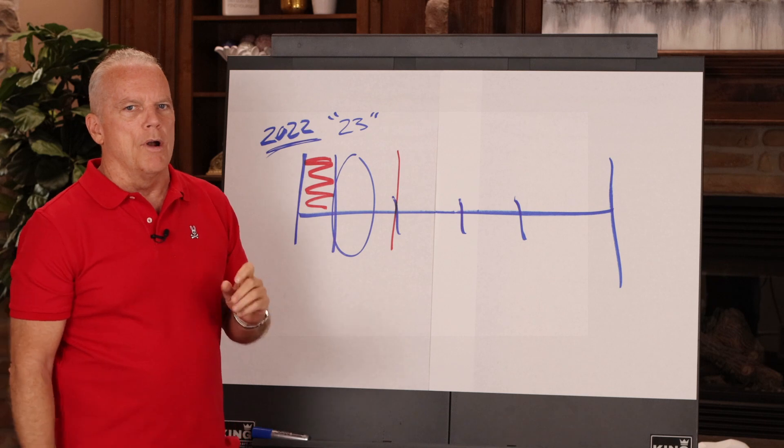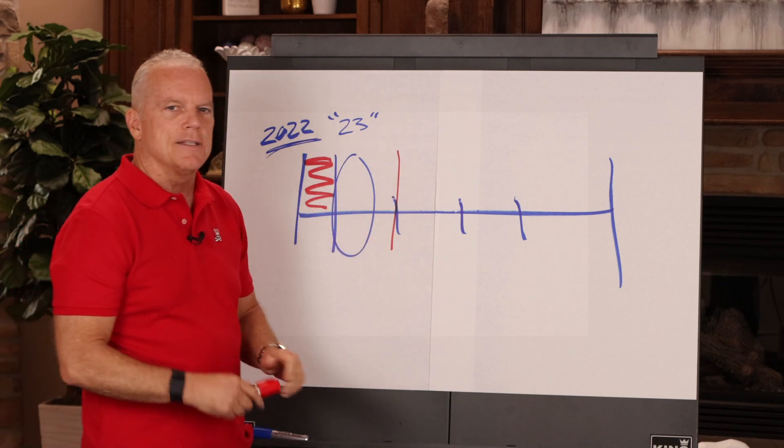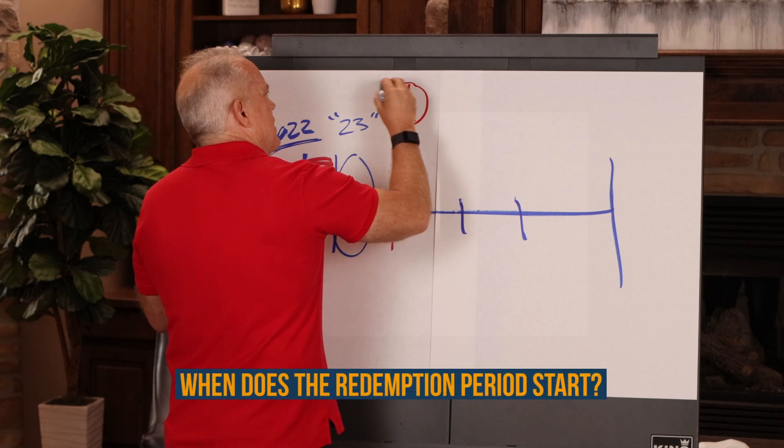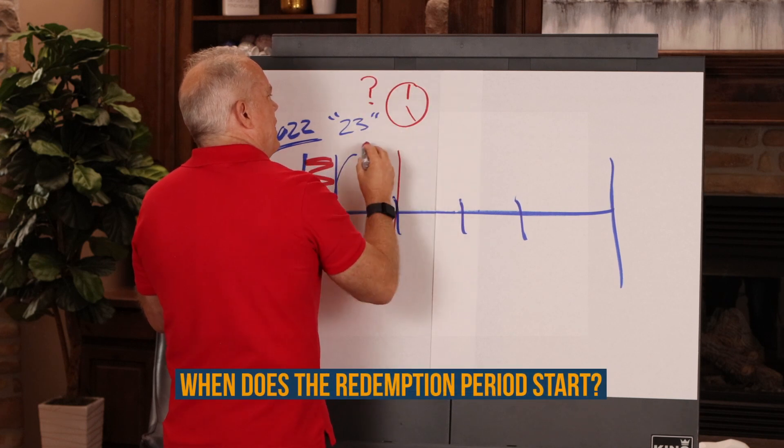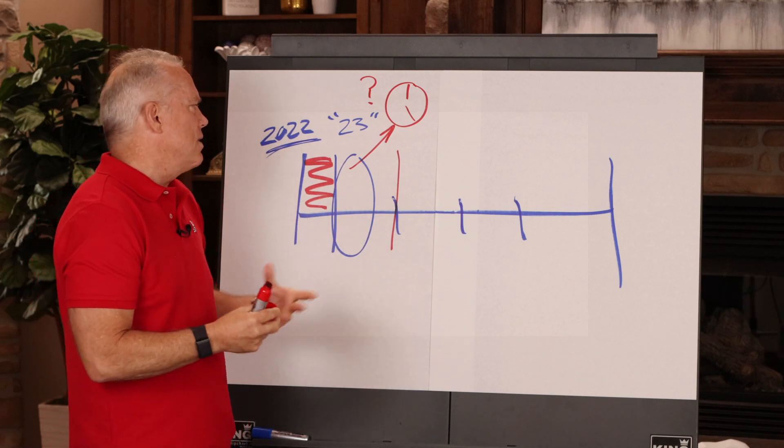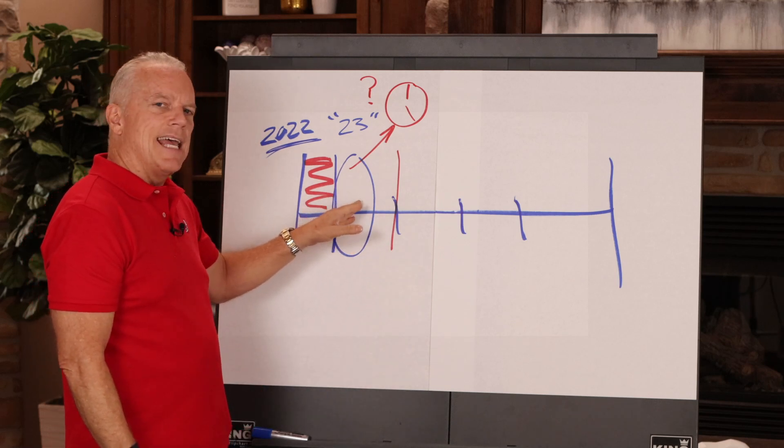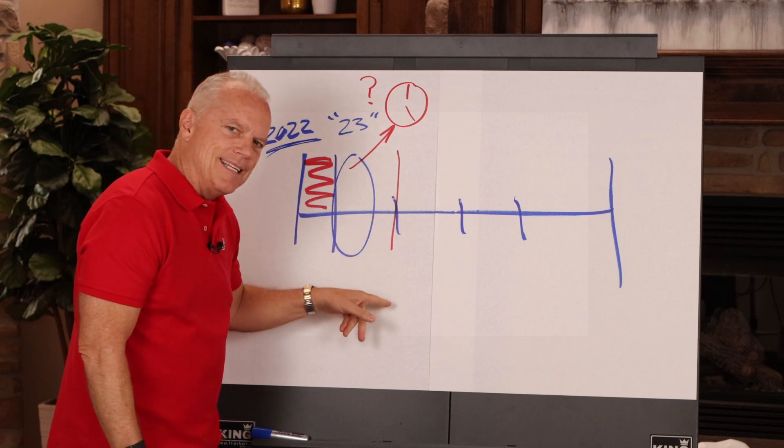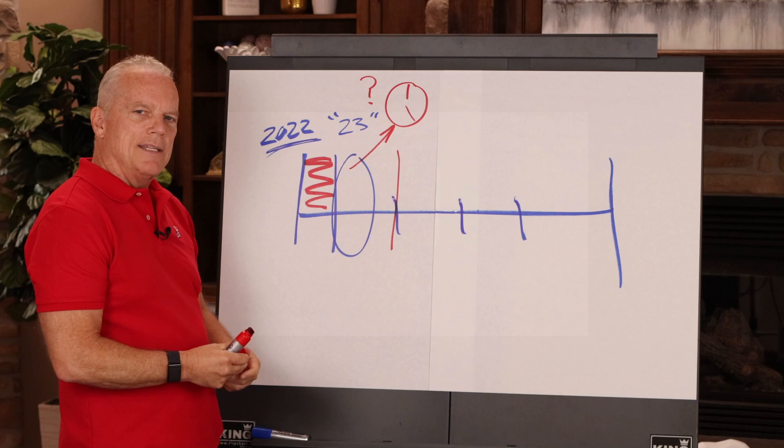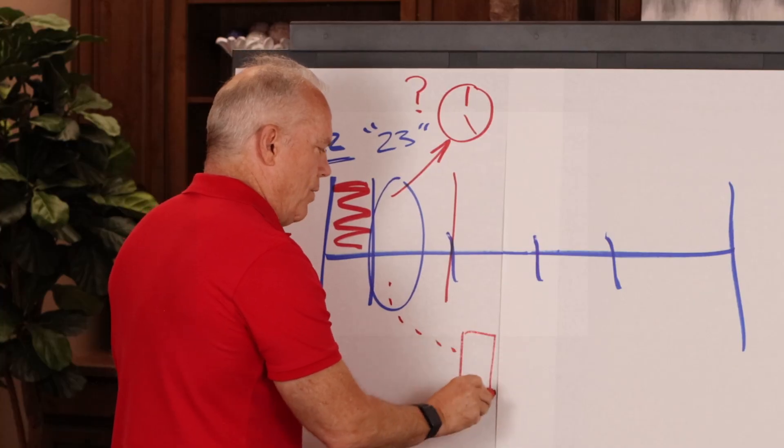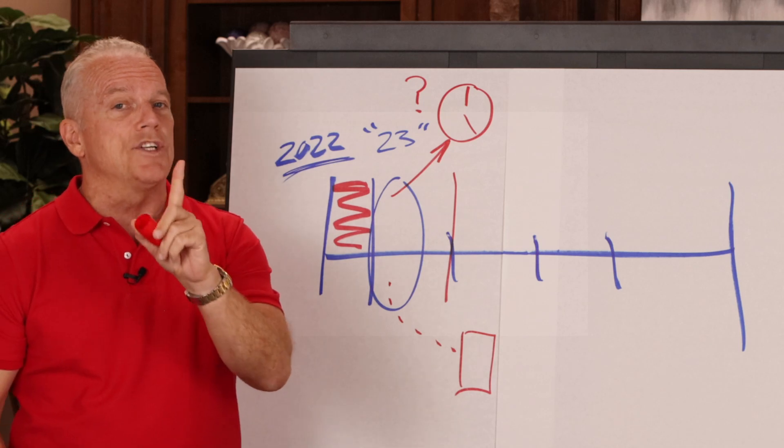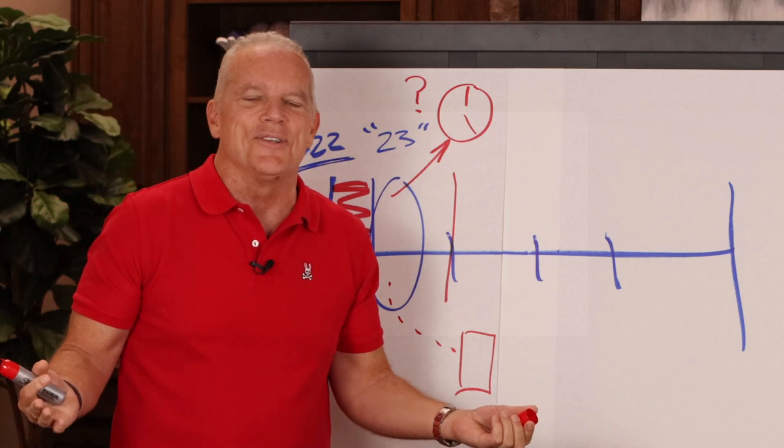But here's the most important part of a tax lien process. The most important part of it is when does the redemption period start? When does the clock start ticking? You'll hear me say that all the time. When does the clock start ticking? Is it the date of the sale or the day somebody buys it? Because if it goes to sale here and nobody buys it, it goes into county inventory. Now, does the county start the clock or not? That's a great question to be asking because it's going to be a different answer depending on where you're at.